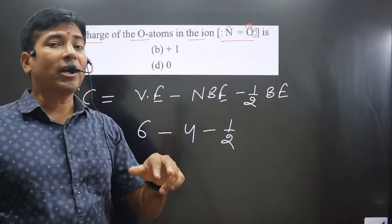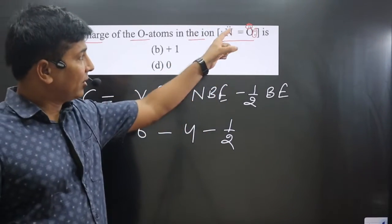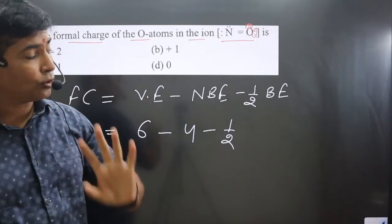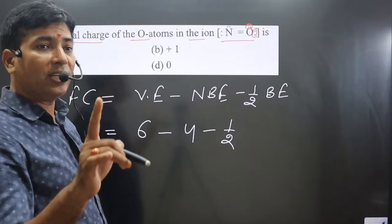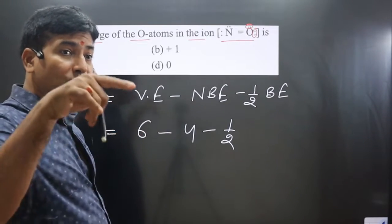Since oxygen has two bonds and each bond carries two electrons, the total bonding electrons equal four. The formula becomes: 6 - 4 - (1/2 × 4), which simplifies to 6 - 4 - 2.